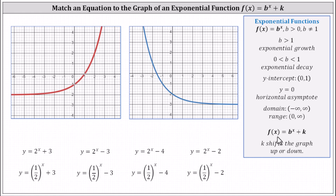When we have exponential functions in the form of b to the power of x plus k, k will shift the graph up or down. Notice in the first row, all the bases are two, but the value of k is different, and for the second row, all the bases are one half, but all the values of k are different.